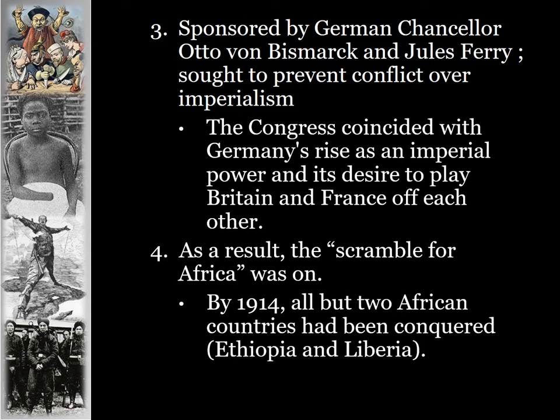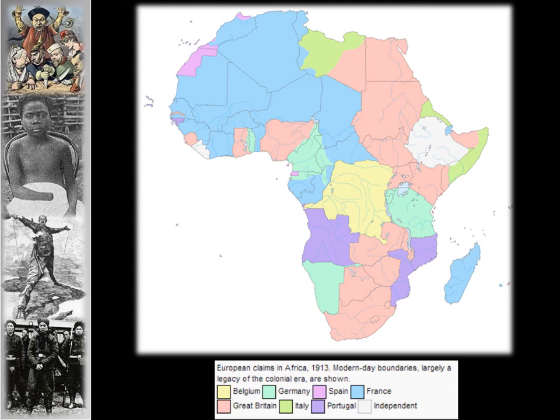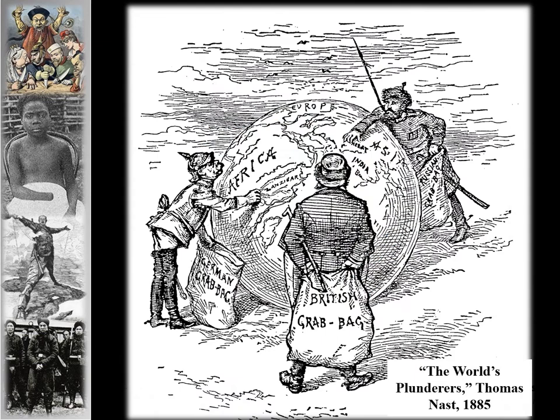By 1914, all but two African countries had been conquered — Ethiopia and Liberia. Ethiopia was attempted to be taken over by the Italians, who failed. Ethiopia fought back and kept Italy from taking the territory until right before World War II. Liberia was an independent state founded by freed slaves from the United States. All the rest of Africa had been taken over by European nations, with different colors on maps representing the different nations that controlled those areas.